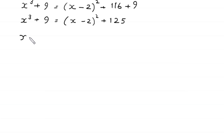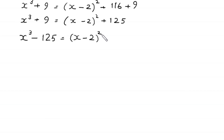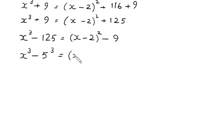Now we move 125 to the left side and 9 to the right side: x cubed minus 125 equals (x minus 2) squared minus 9. We can write this as x cubed minus 5 cubed equals (x minus 2) squared minus 3 squared.